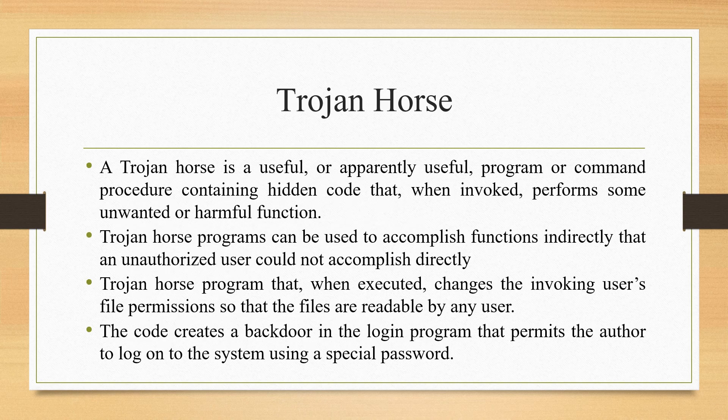A Trojan horse is a useful or apparently useful program or command procedure containing hidden code that, when invoked, performs some unwanted or harmful function. Trojan horse programs can be used to accomplish functions indirectly that an unauthorized user could not accomplish directly — for example, to gain access to the files of another user on a shared system. A user could create a Trojan horse program that when executed changes the invoking user's file permissions so that the files are readable by any user. The author could then induce users to run the program by placing it in a common directory and naming it such that it appears to be a useful utility program or application.